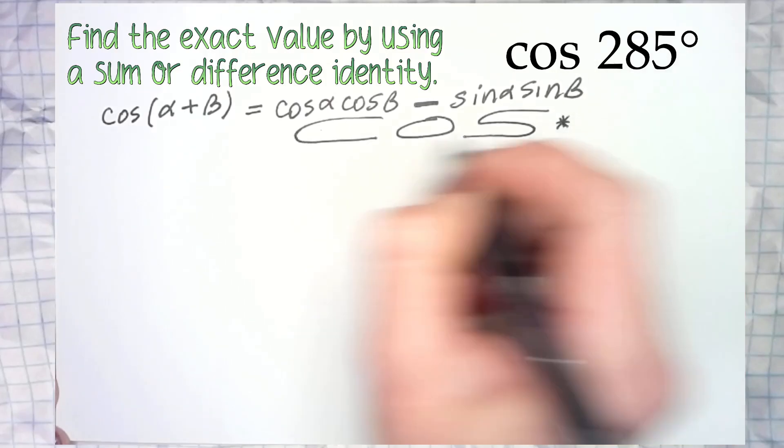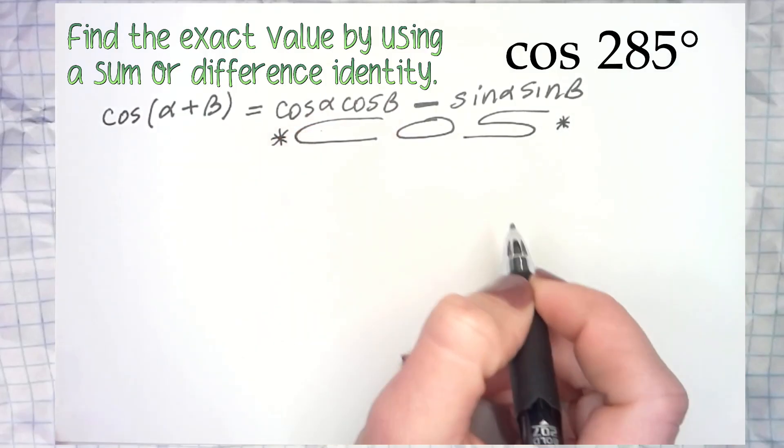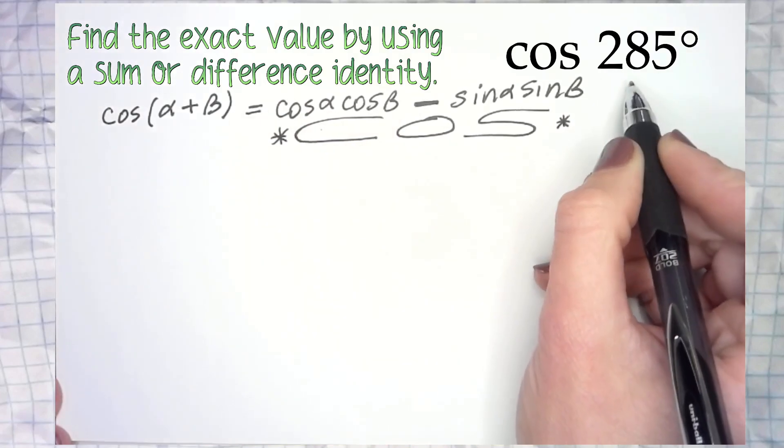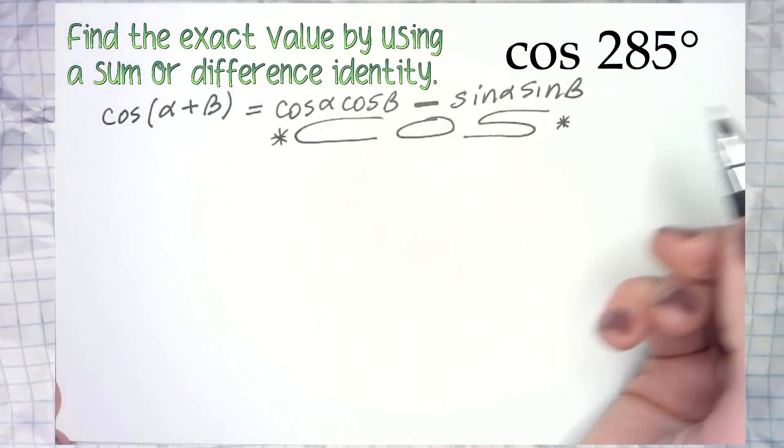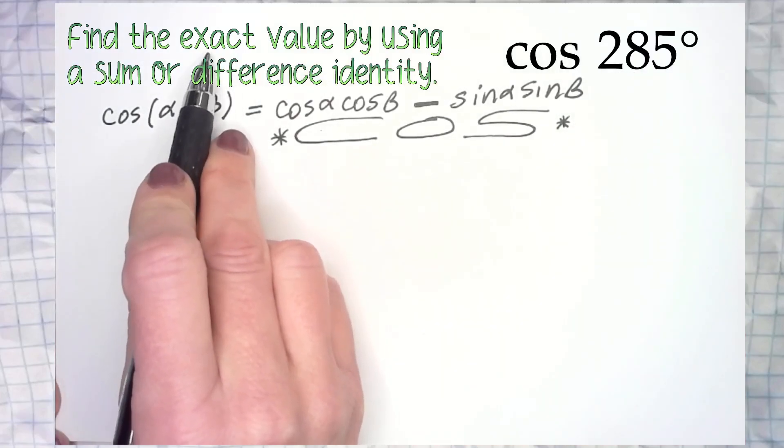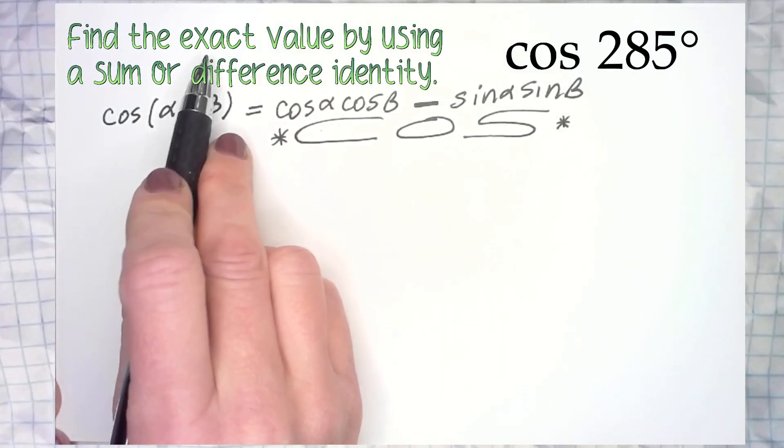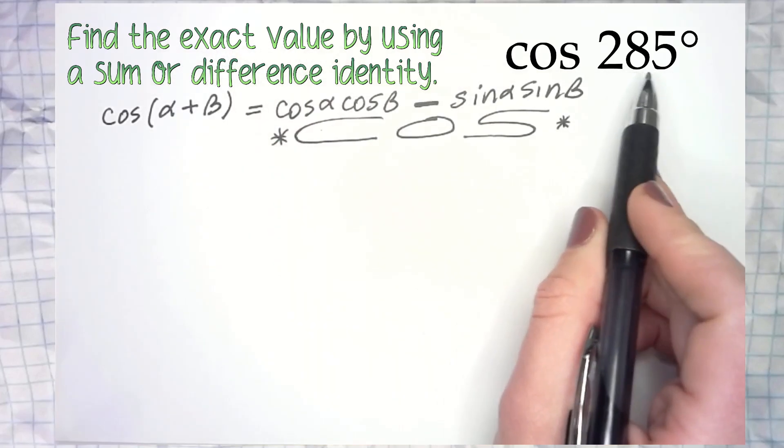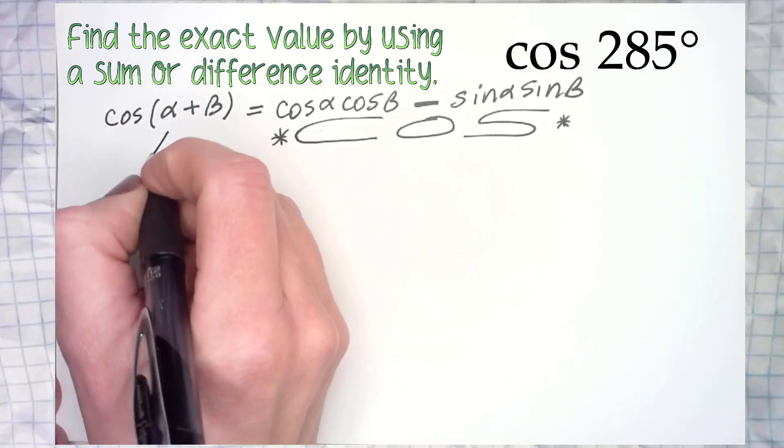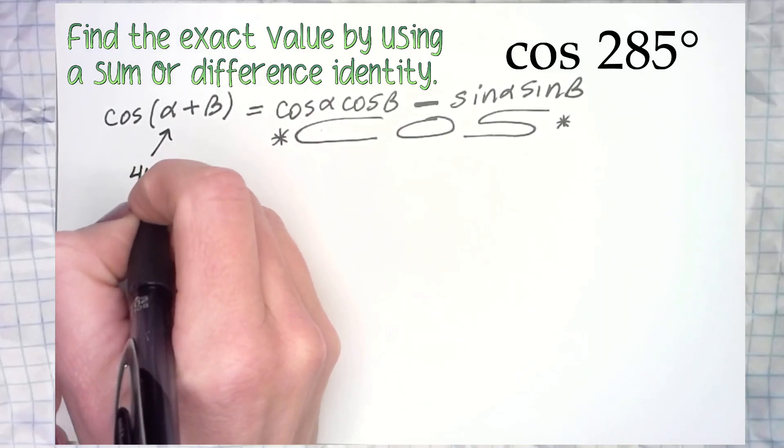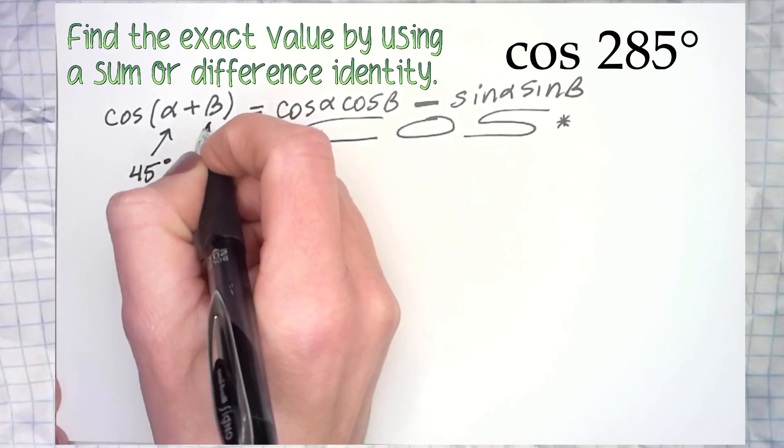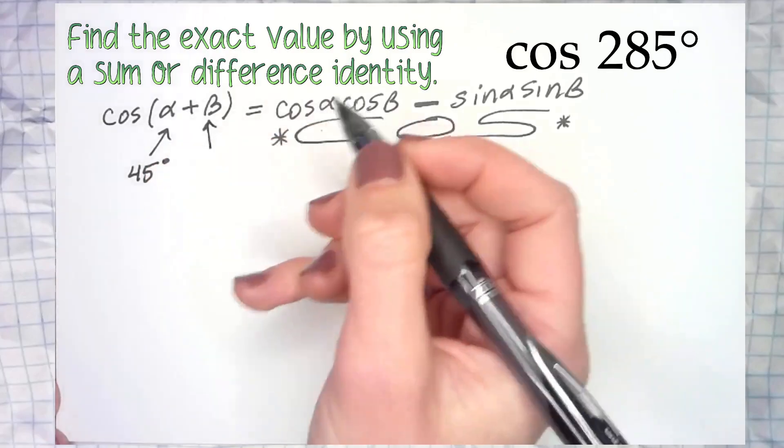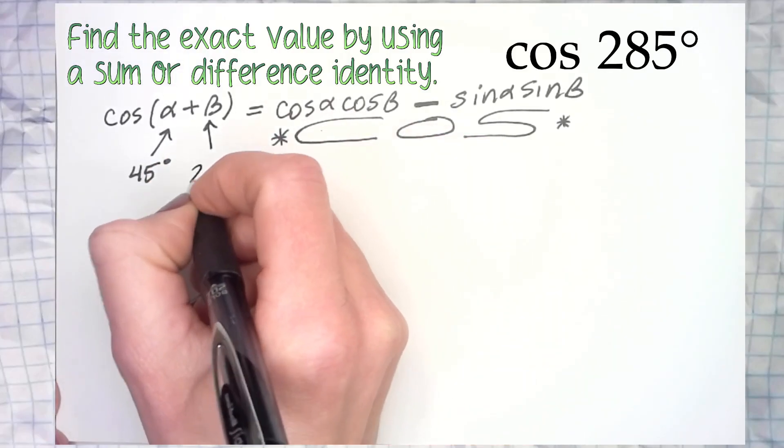Okay, so alpha and beta - what are we filling in? We need two things that add to give us 285, because we want to find this exact value. That means no calculators involved, just your brain and your knowledge of the unit circle. And 285 is not on the unit circle. So alpha, we're going to start always with 45 degrees, and then use our noggin to figure out what beta would be. So 45 plus what is 285? That would be 240 degrees.